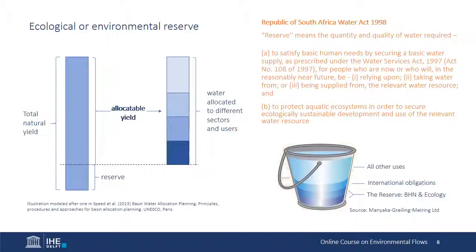The process of setting aside water for the environment and issuing use permits up to a maximum level of the quantified allocatable yield is in some ways similar to the setting of a cap on diversions, but as applied in Africa, the values of the allocatable yield and reserve do not vary annually. Thus they are only long-term planning tools, and other approaches are needed to deal with changing water availability among years, seasons, and even days.